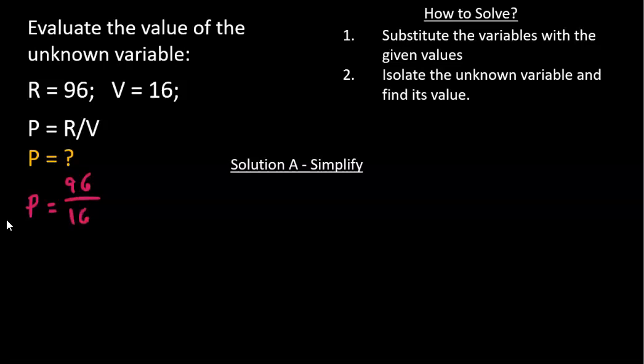Now, this is not intuitive, but to make it simpler, we can simplify both the numerator and the denominator by 2. So 96 divided by 2 is 48, and 16 divided by 2, that's 8.